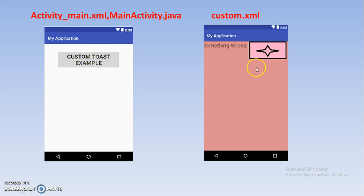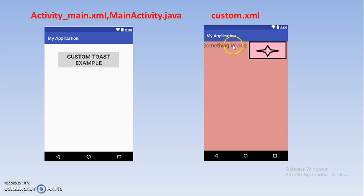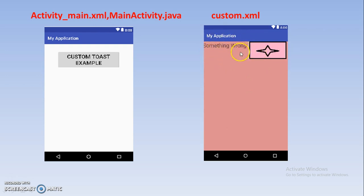For creating a custom toast you must also have one separate additional XML file. This is our second XML file — name it, for example, custom.xml. You create this XML file in Android Studio. In that file I have one image component (ImageView) and one more text view component. You can add any component you want. So that is the separate layout file, and it contains the widgets.